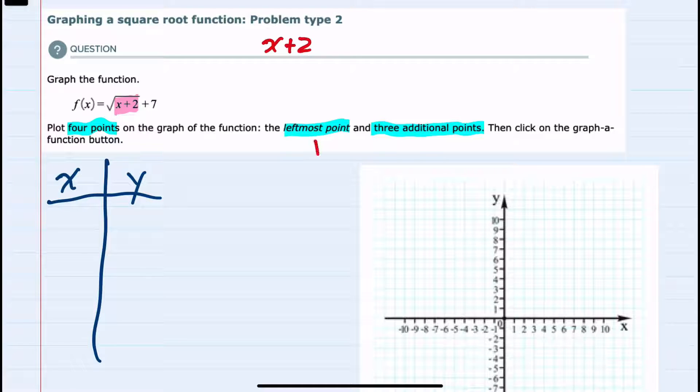First to find the leftmost point, that would be where the x plus 2 equals 0, since 0 is the smallest number that we can take the square root of. And solving for x, that would mean an x value of negative 2.